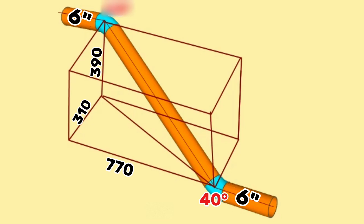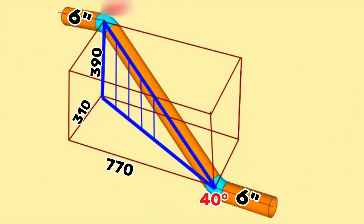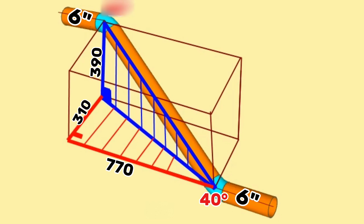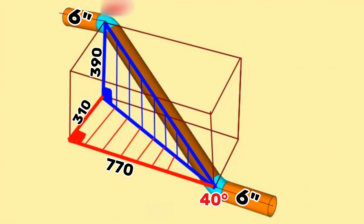Two right triangles are formed with dashed lines after the pipeline rises vertically obliquely and turns 310 millimeters to the right from the second elbow. Let's mark the vertical right angle triangle formed by dashed lines with blue color, and the horizontal right angle triangle with red color. The hypotenuse of the vertical blue right angle triangle is the distance between the elbows. Let's mark it with big letter H, and the hypotenuse of the horizontal red right angle triangle with small letter h.